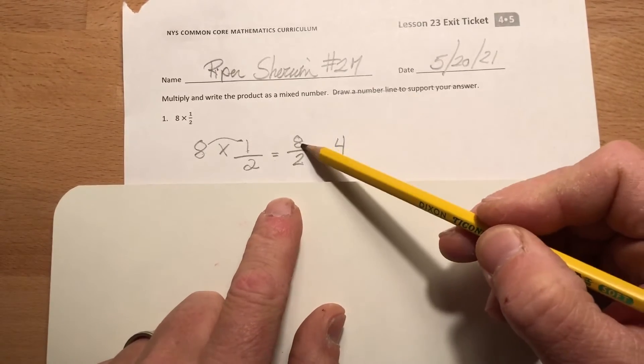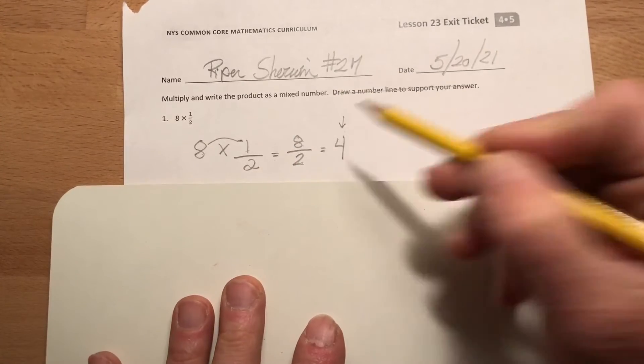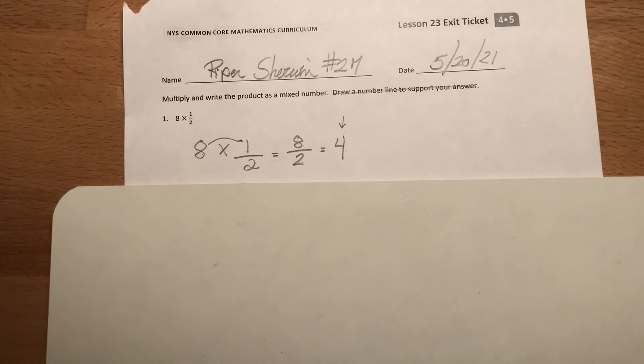Then to switch it into a mixed number I do two fits into eight how many times? Four times and there's none left over. So my answer is just four. Okay, so eight halves would be four.